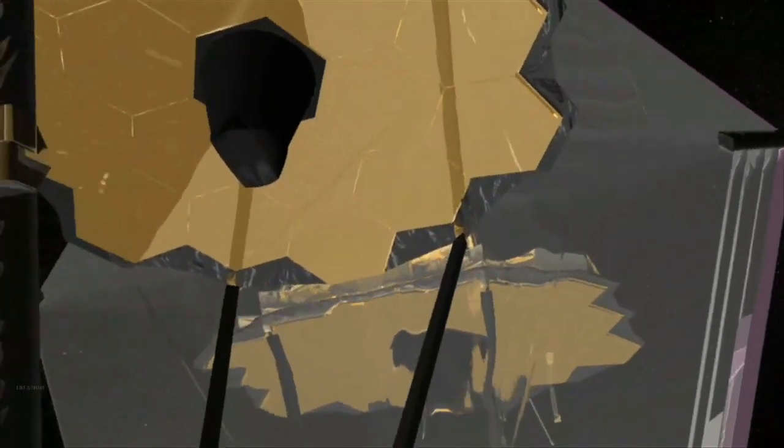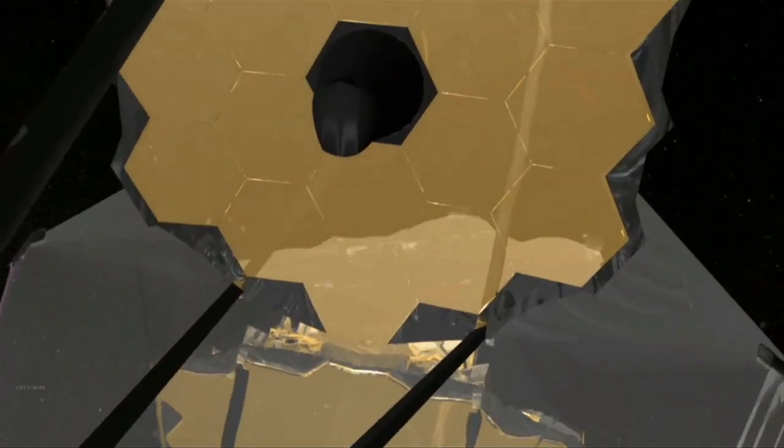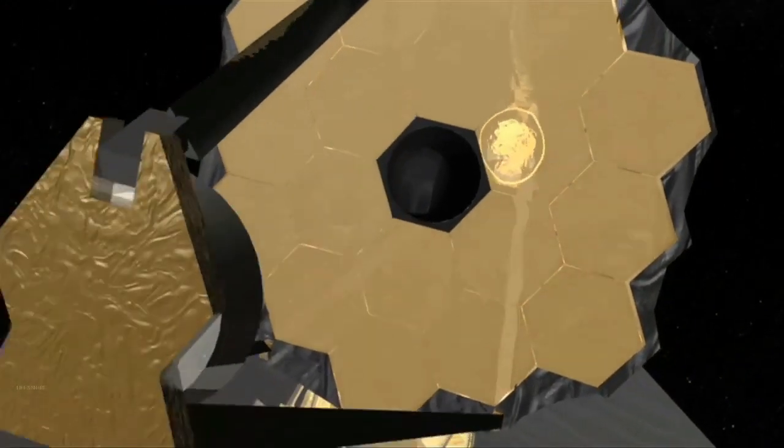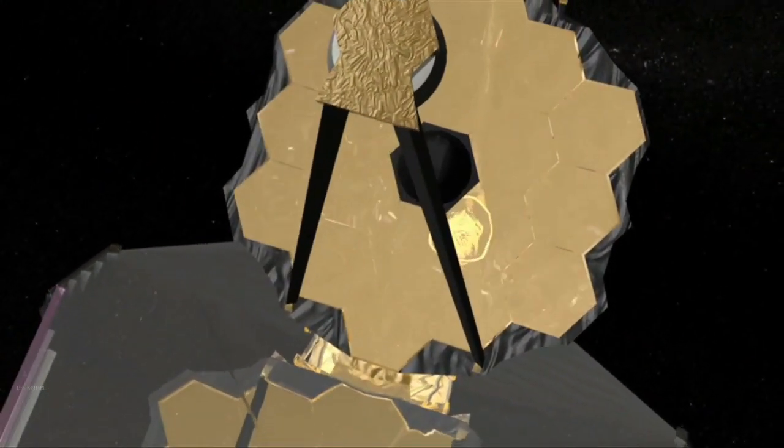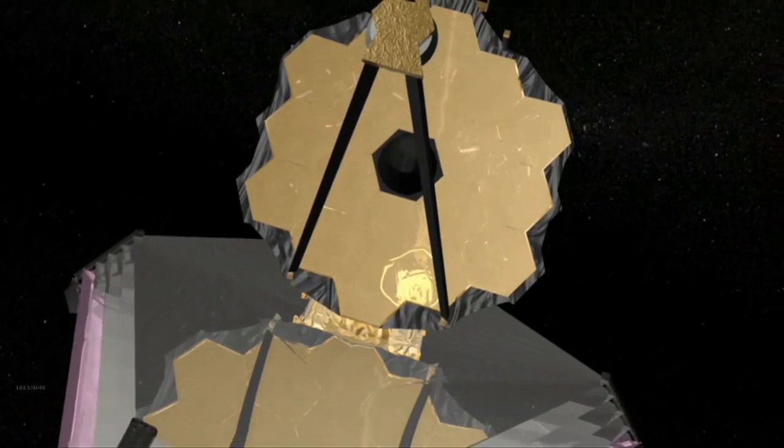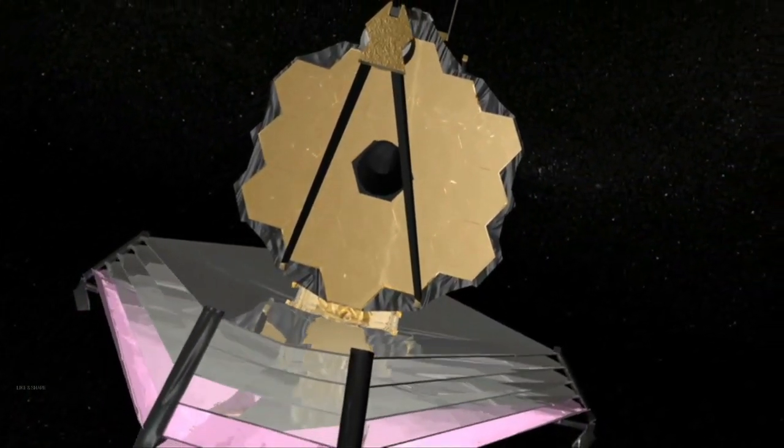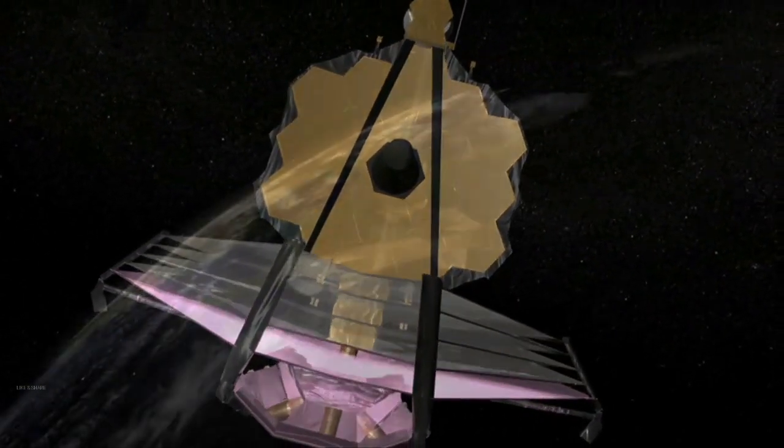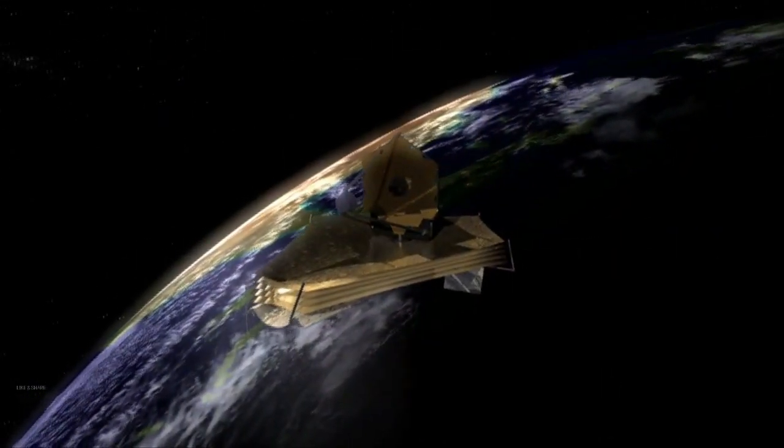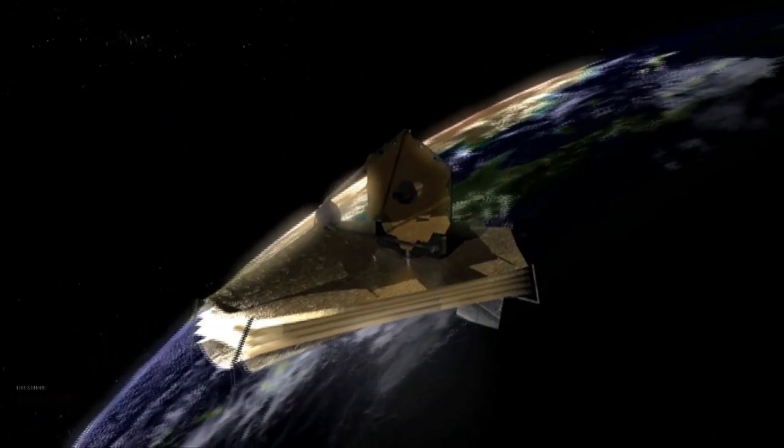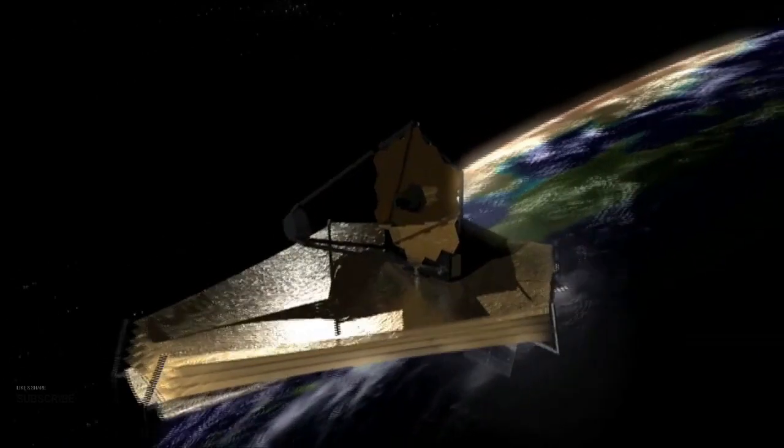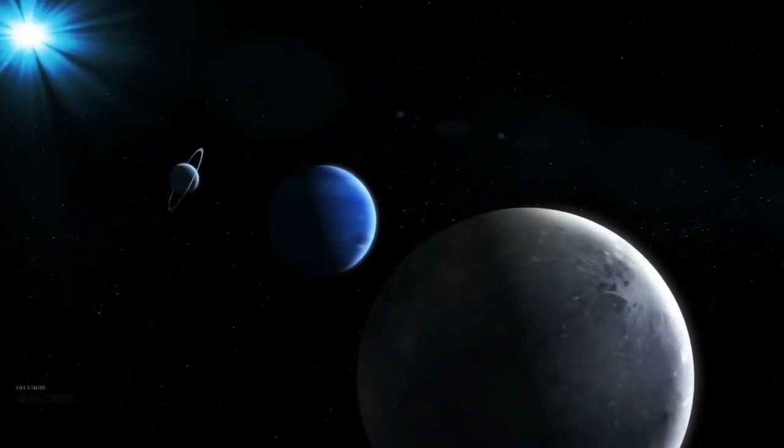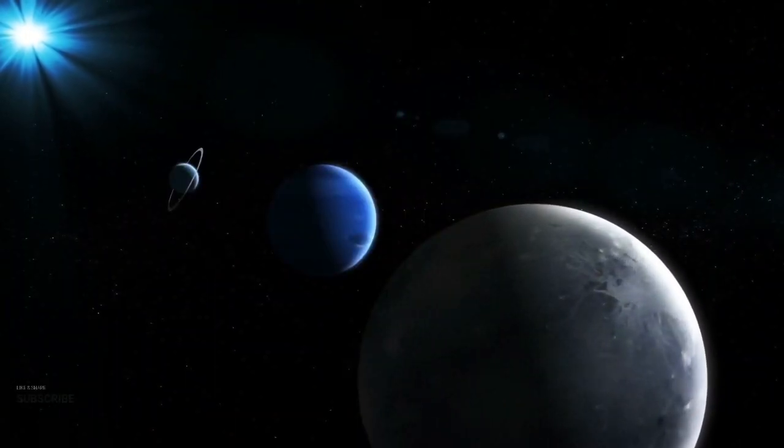The discovery of Goldilocks planets is a monumental step in the search for extraterrestrial life. These planets, which are situated just at the right distance from their stars, offer the potential for conditions akin to Earth. As we find more of these celestial bodies, our chances of finding life or conditions suitable for life skyrocket.